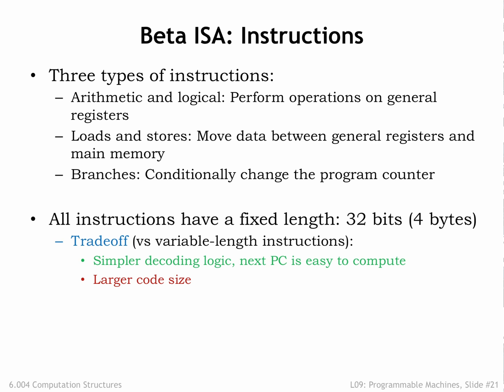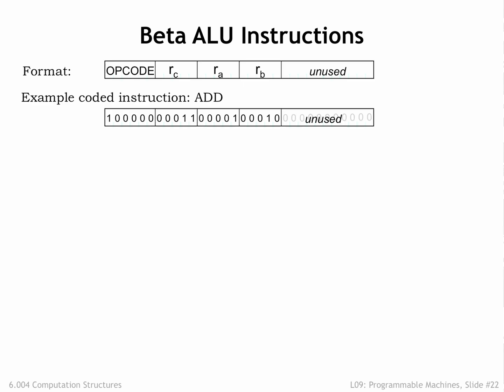Nowadays, advances in memory technology have made memory size less of an issue, and the focus is on the higher performance needed by today's applications. Our choice of fixed-length encoding leads to larger code size, but keeps the hardware execution engine small and fast. The computation performed by the Beta datapath happens in the arithmetic and logic unit, or ALU.